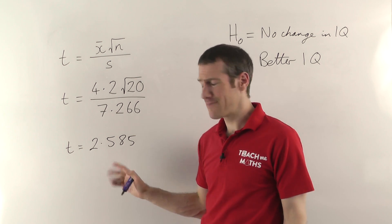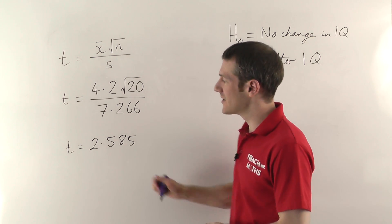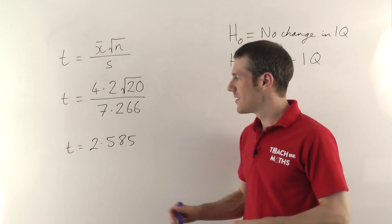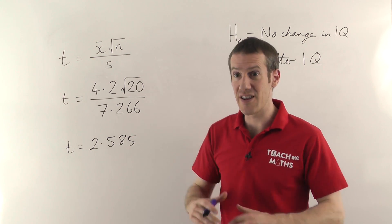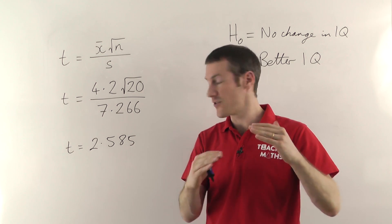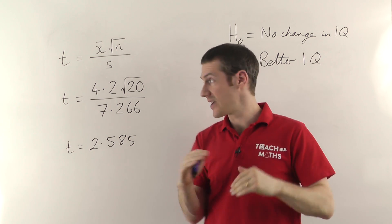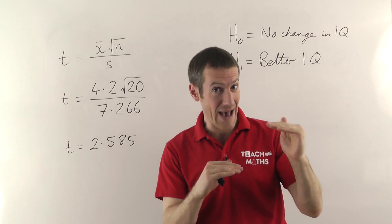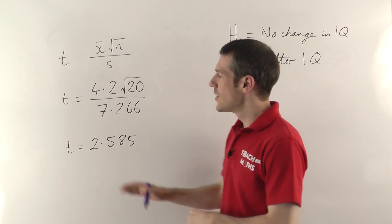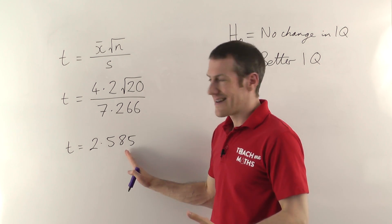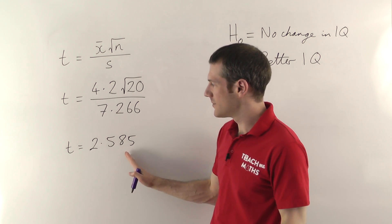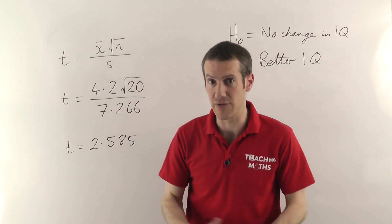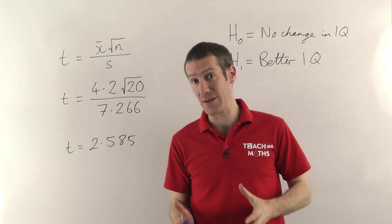What does that mean? Well if you remember from the overview video, essentially the larger the t-value is, the more confident we can be that there is a real difference between the two means that we're comparing. In this case, the mean IQ before they took the drug and the mean IQ after they took the drug. But to see how big is significant, to see how important this is and whether or not this is a big enough value of t, you have to compare it with a t-table.